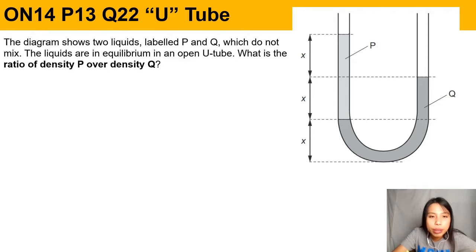The liquids are in equilibrium in an open tube, means they're just balanced, they're not moving up and down. What is the ratio of density P over density Q? Don't worry about how you're going to find the ratio, just stick to the basics: balance the left and the right. So pressure in equilibrium, the pressure on the left side should be the pressure on the right side of this tube.